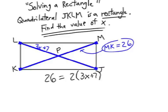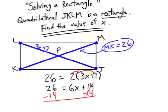Let's solve this. We need to use the distributive property and that will be 6X plus 14 equals 26. I'm going to subtract 14 from each side, which gives me 6X equals 12. X must be 2.